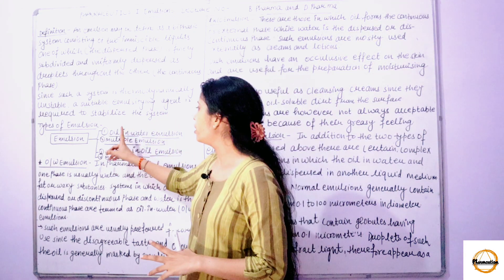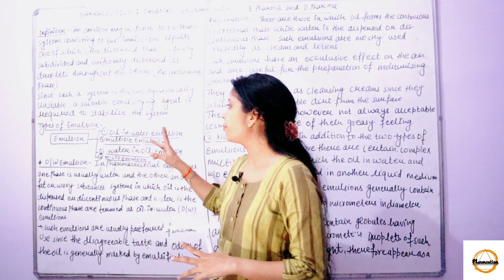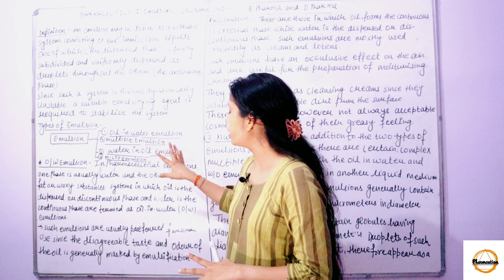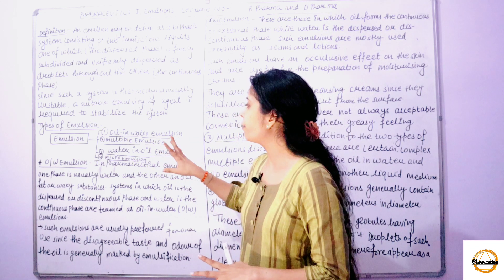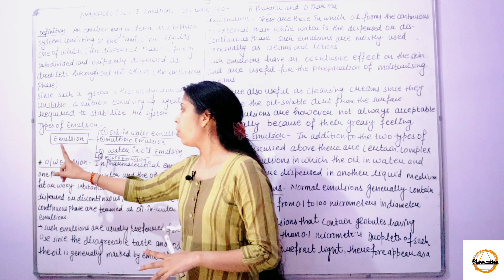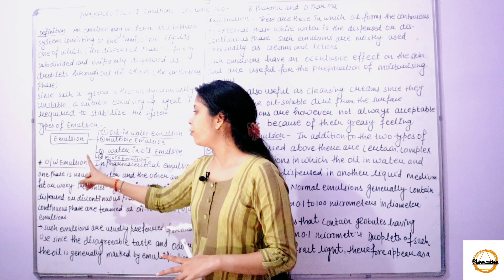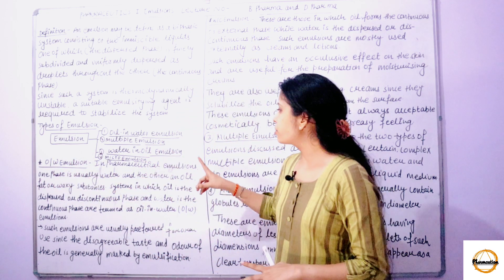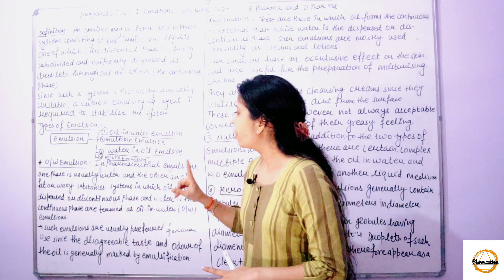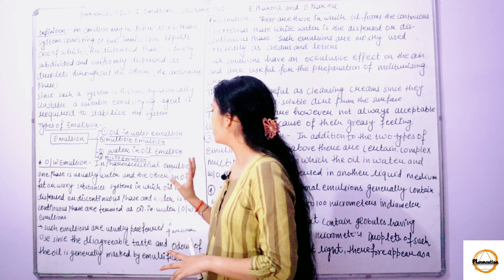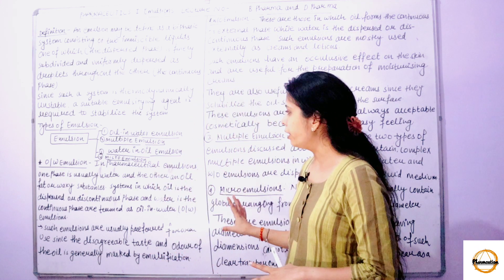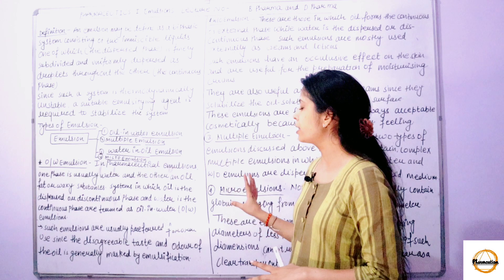Number one is oil-in-water emulsion. Number two is multiple emulsion. Number three is water-in-oil emulsion. Number four is microemulsion. In pharmaceutical emulsions, one phase is usually water and the other is an oil, fat, or waxy substance.